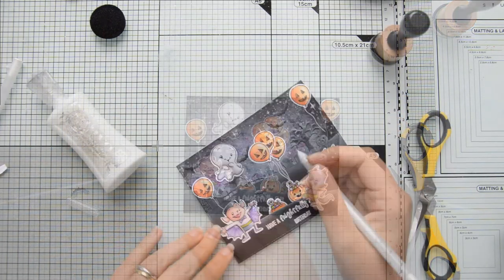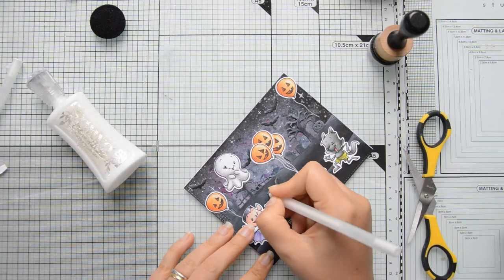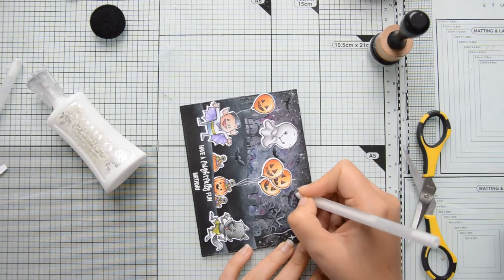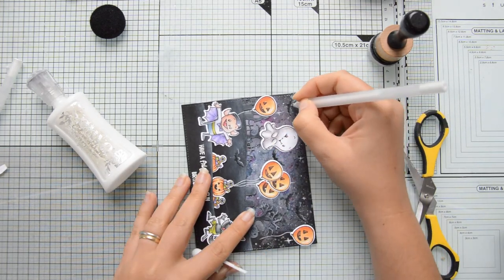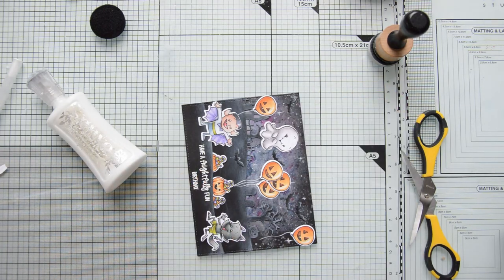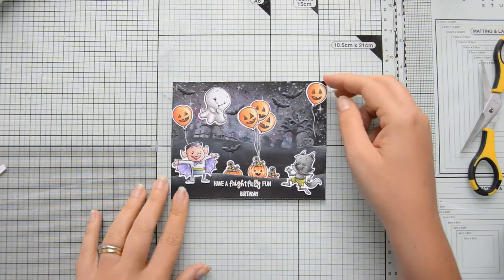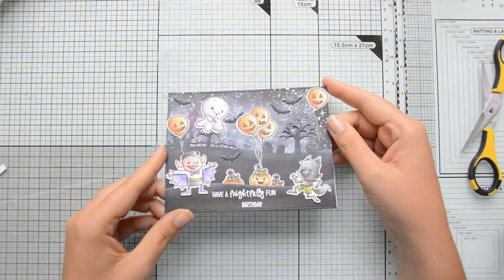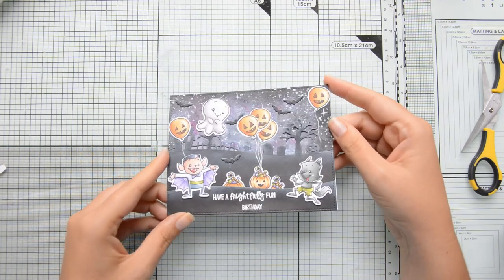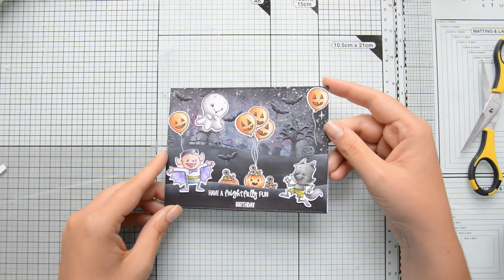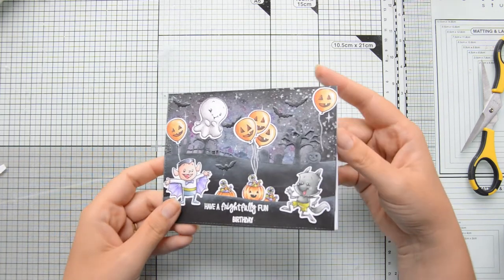Then as a final step, I die cut some bats using the Spooky Scape die and some black cardstock. I added some shading with the same white pigment ink that I used on the hills, and then some white highlight, this time with a Number 5 white Sakura Jelly Roll pen, and that finished off the card.